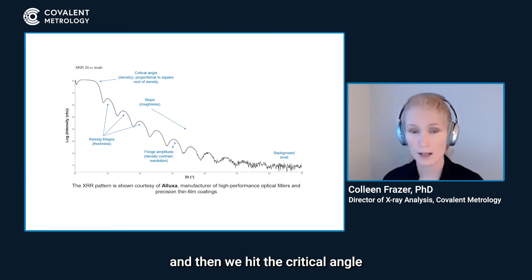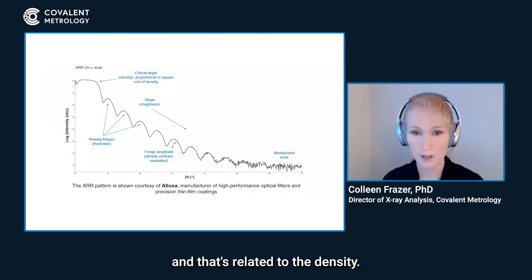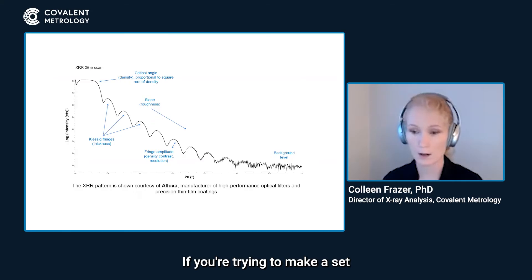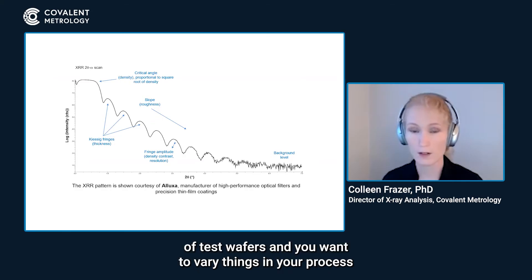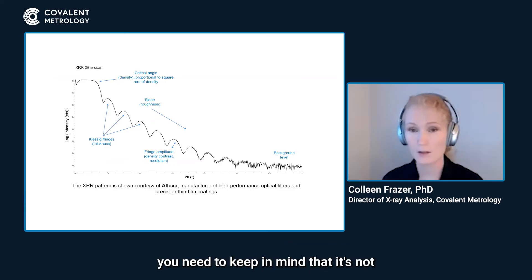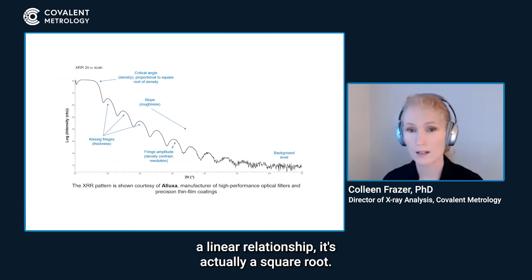Then we hit the critical angle, and that's related to the density — in fact proportional to the square root of the density, which is important to keep in mind. If you're trying to make a set of test wafers and you want to vary things in your process so you can actually see this critical angle changing, you need to keep in mind that it's not a linear relationship; it's a square root.